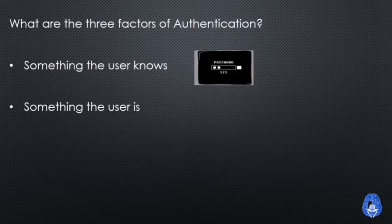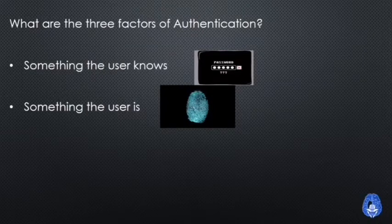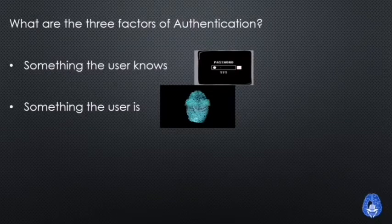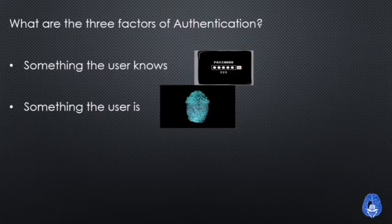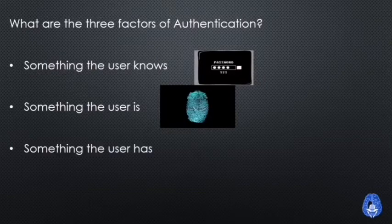The second factor is something the user is. This means the user needs to be physically present or available to provide authorization. As you can see in the GIF, it shows a fingerprint. So fingerprint, biometric authentication, retina scanning, voice matching, and face matching are all examples of something the user is — the second factor of authentication.